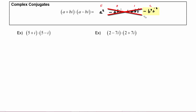Over here, we know that i² will be negative 1, so minus b² times i² is going to become plus b². So when we multiply complex conjugates together, the result is simply a² + b².